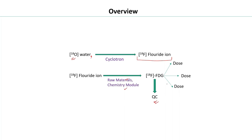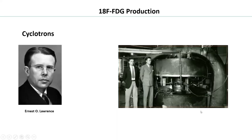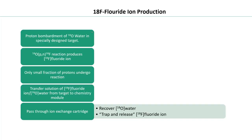A key ingredient for FDG production is a particle accelerator. Ernest Lawrence developed the first cyclotron at the University of California, Berkeley, and was awarded the Nobel Prize in Physics for this achievement. The cyclotron accelerates charged particles like protons, electrons, and alpha particles to very high velocities. Medical cyclotrons accelerate protons to a range of 11 to 17 mega-electron volts for FDG production.